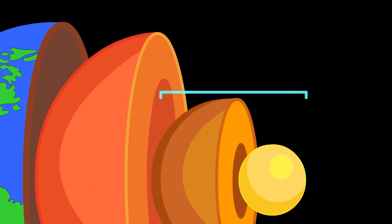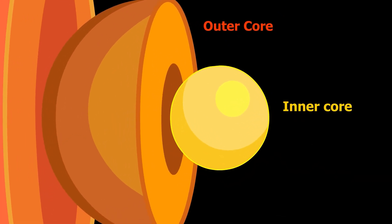Below the mantle is the core, made up of iron and nickel. The deeper one travels inside the Earth, the hotter it is. The temperature in the core is between 4,000 degrees Celsius and 5,000 degrees Celsius.